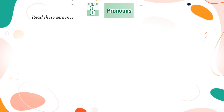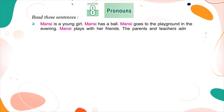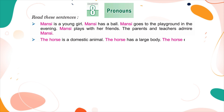Read these sentences. Mansi is a young girl. Mansi has a ball. Mansi goes to the playground in the evening. Mansi plays with her friends. The parents and teachers admire Mansi. The horse is a domestic animal. The horse has a large body. The horse eats green grass and fodder. The horse can run very fast.